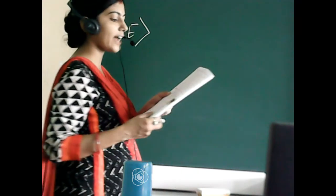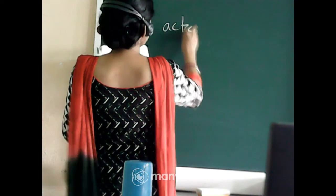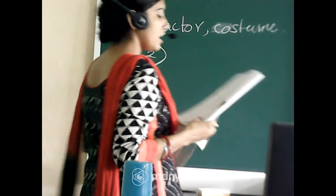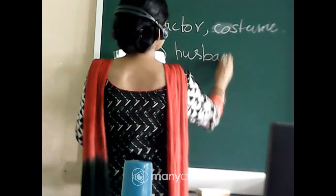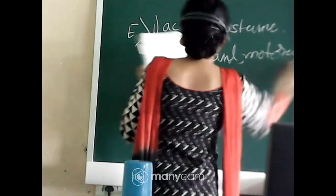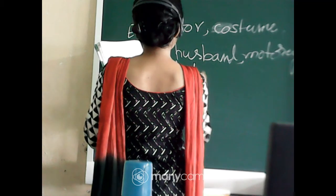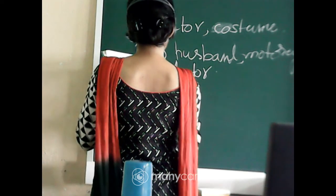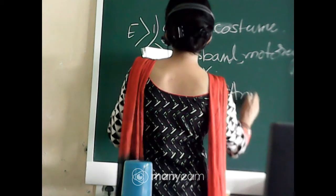Number 1: 'The actor was wearing an old costume.' You have to underline the nouns — actor and costume. Number 2: 'Her husband fell off a motorcycle. We had to take him to a doctor.' Underline husband, motorcycle, and doctor. Number 3: 'Both Arushi and Ankit are good athletes.' Underline Arushi, Ankit, and athletes.